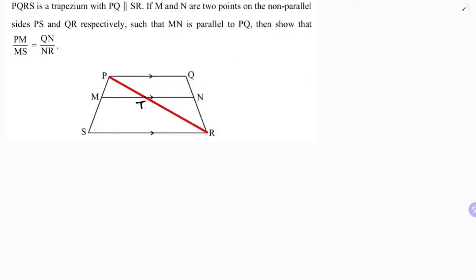The first one is triangle PSR. In that, MT is parallel to SR. So as MT is parallel to SR, I'll apply BPT: PM/MS equals PT/TR. The reason is BPT. This is equation 1.